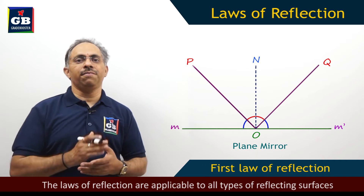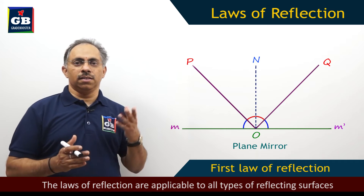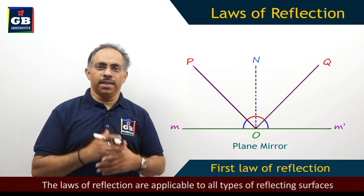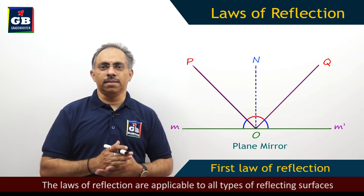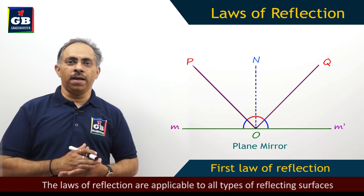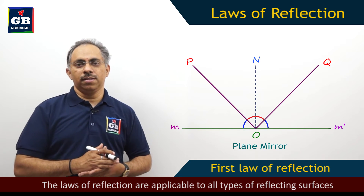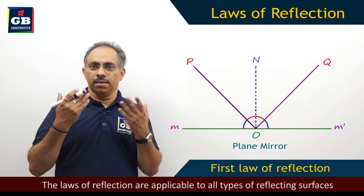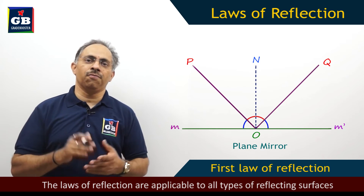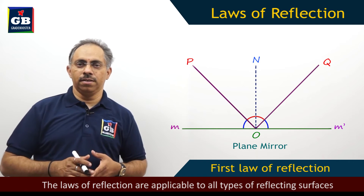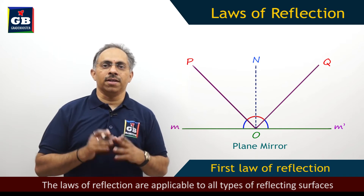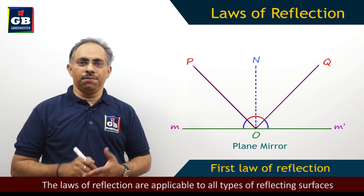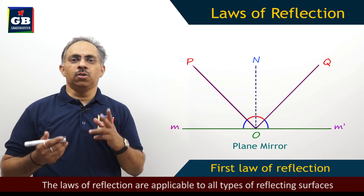Now, we have certain laws of reflection which plane mirrors will obey. Not only plane mirrors — any surface wherein a light ray is incident and is reflected back into the same medium. So any reflection, anywhere, whether you take the regular reflection or diffuse reflection or whatever it is, will basically obey these laws of reflection.